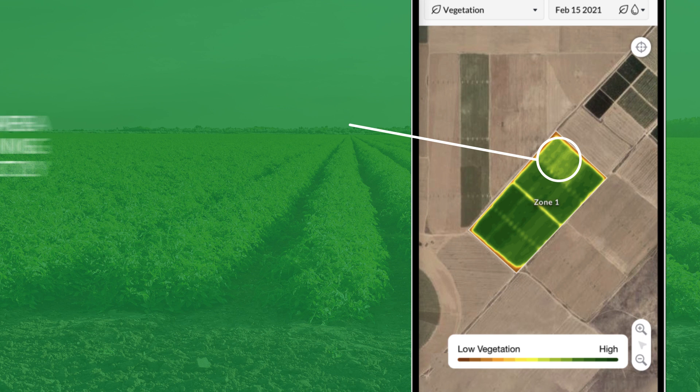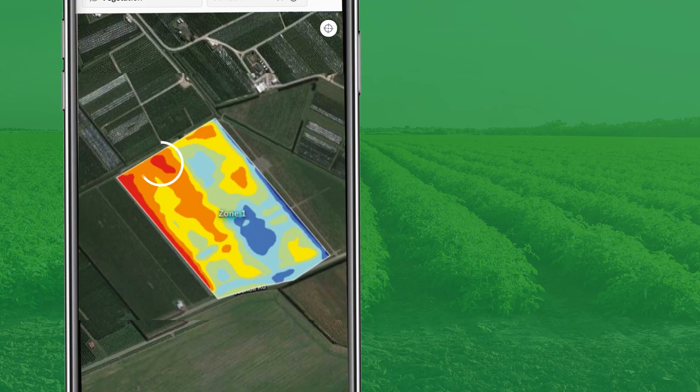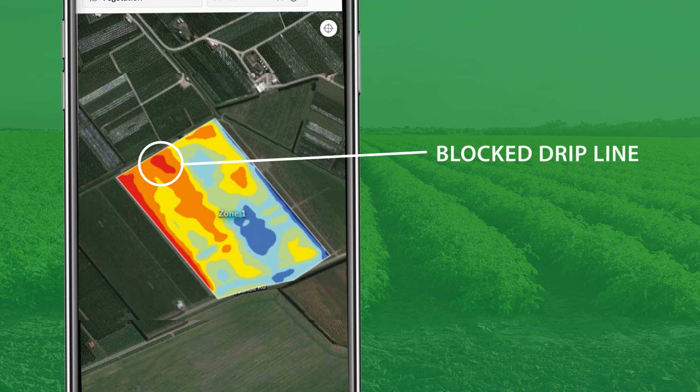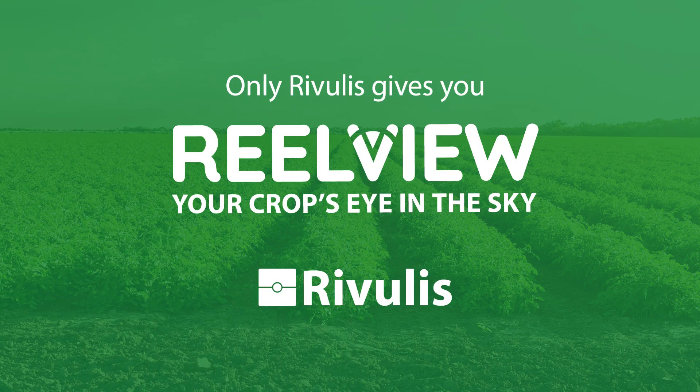When there is a difference, it is sudden, or a small isolated area, or an area that corresponds to a specific irrigation area like a drip line or even a field valve area — this indicates there may be an irrigation or plant health problem. Remember, the imagery shows a potential problem; however, you need to check what it is. For example: an irrigation problem, a fertilizer problem, or plant disease. Only Rivilus gives you RealView to locate irrigation problems.